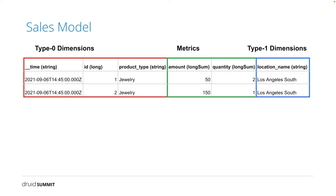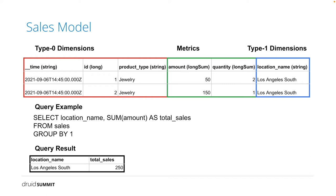Here is an example sales event. In this table, we have type 0 dimensions — since their values are not changeable, queries do some aggregations against the matrix. Type 1 dimensions have values that are changeable and could be removed. In this basic query, it sums up the amount as total sales, grouped by the location name field, which is a type 1 dimension. This query returns total sales by location name to merchants, so the total sales in Los Angeles South is 250.